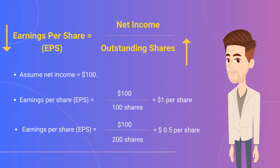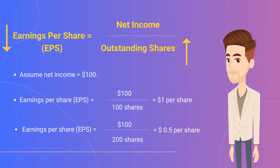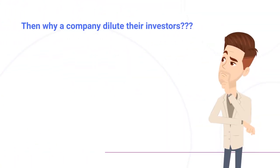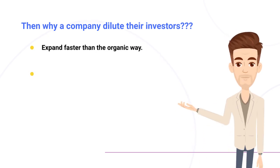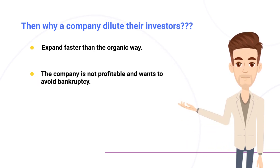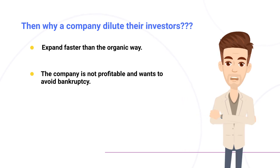This makes the stock less attractive for new investors because the amount of earnings per share is decreasing. You might ask yourself, then why would a company continue to issue new stocks and dilute their investors? The answer could be one of two things: either the company wants to expand and increase their business operation faster than the organic way, which is reinvesting the earnings back in the business, or the current business operation is not profitable, so they have to depend on other sources of income to pay their expenses and avoid bankruptcy.